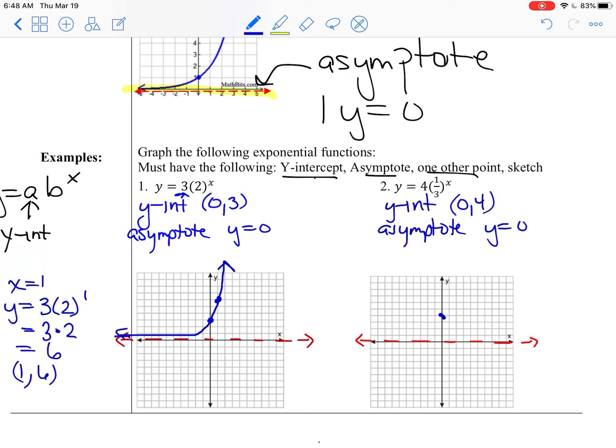And now we do one other point. Again, the same thing I'm going to do. I'm going to put x equals 1 into my equation. So y equals 4 times 1/3 to the first. So that becomes 4/3. And you're probably thinking, how am I going to graph 4/3? Well, change it to a decimal. So it's 1.3.